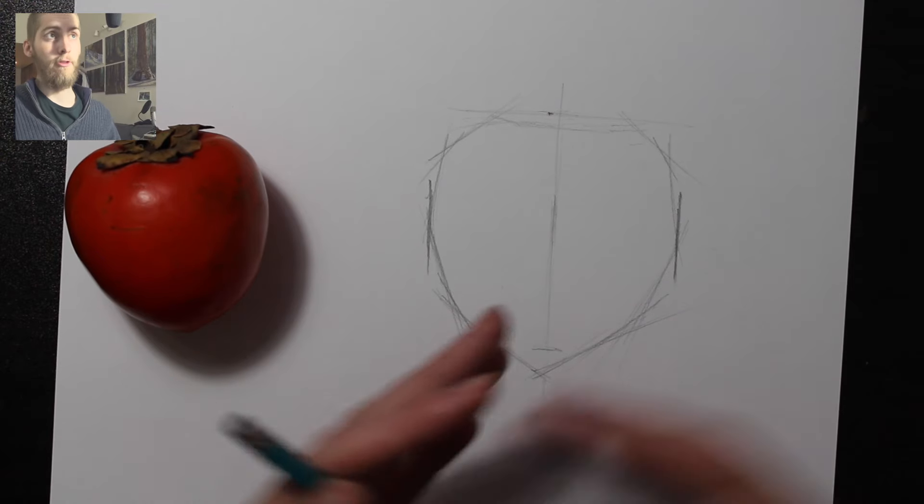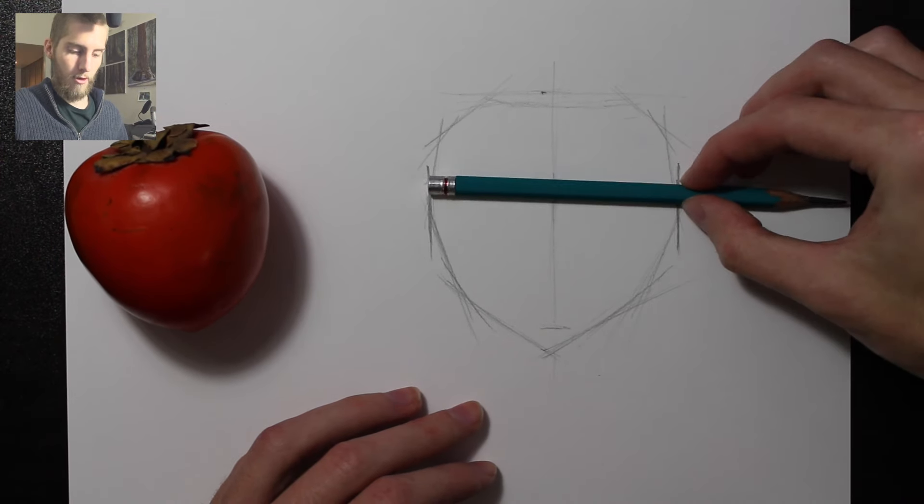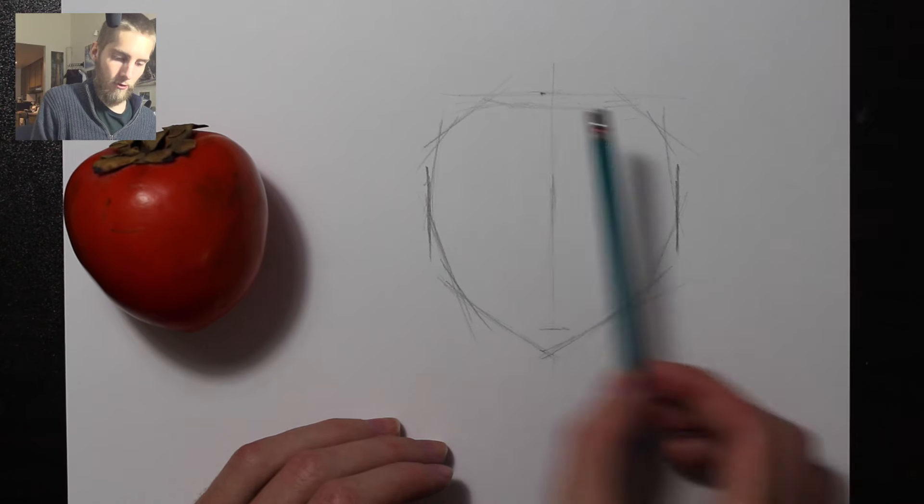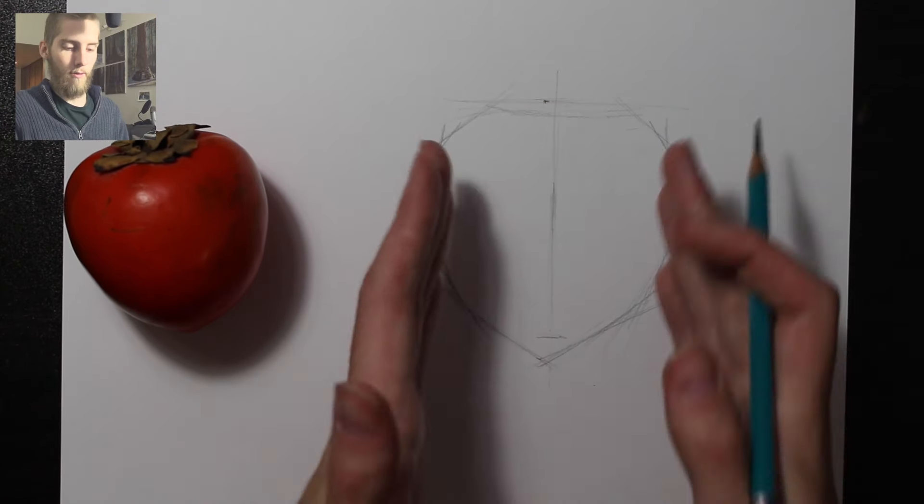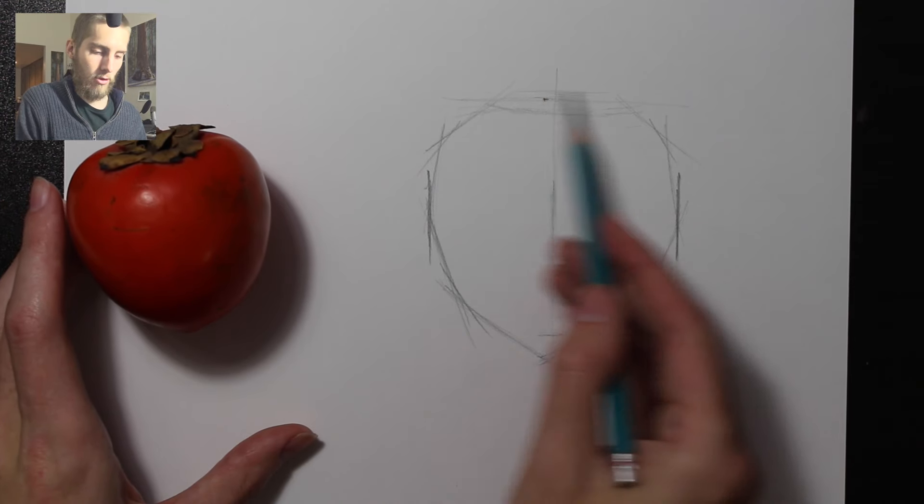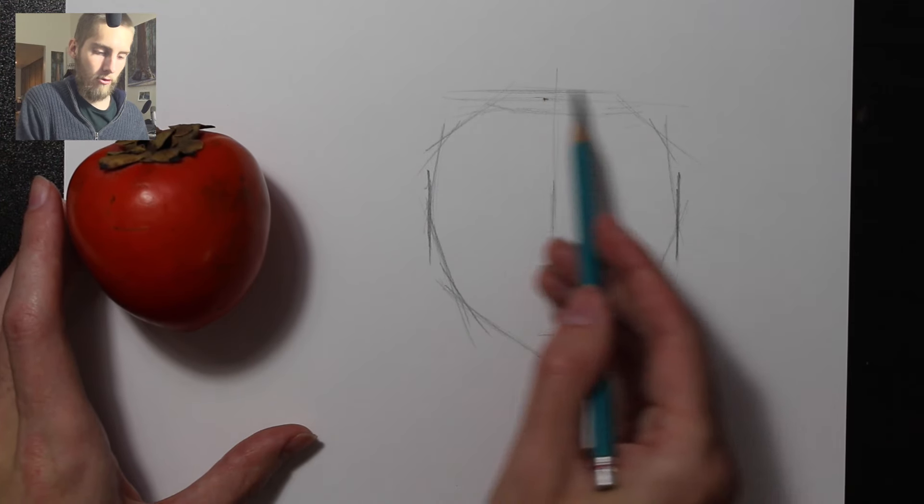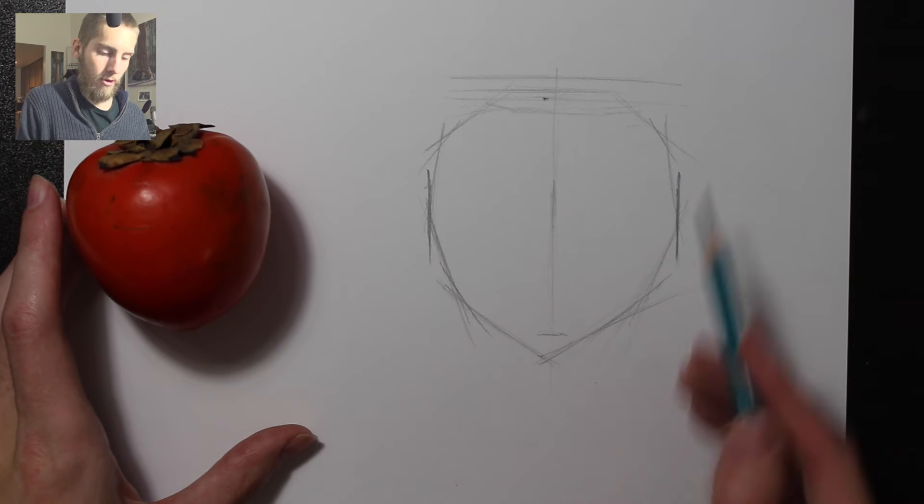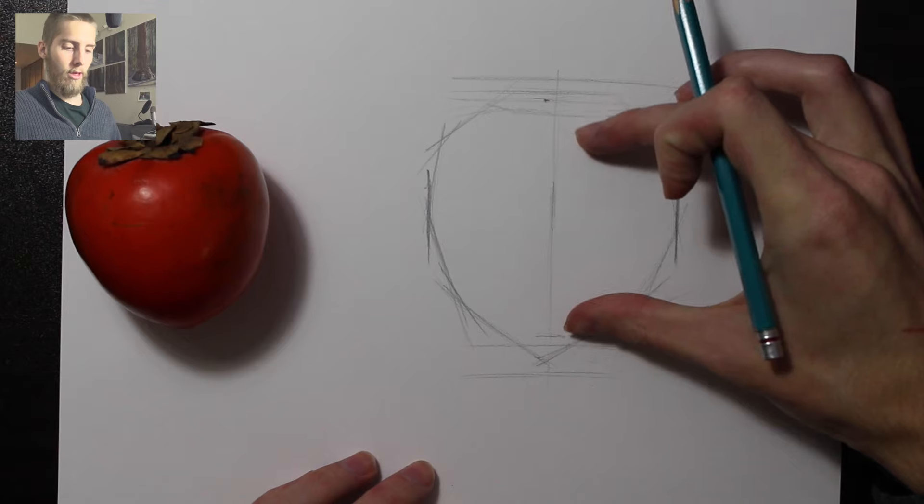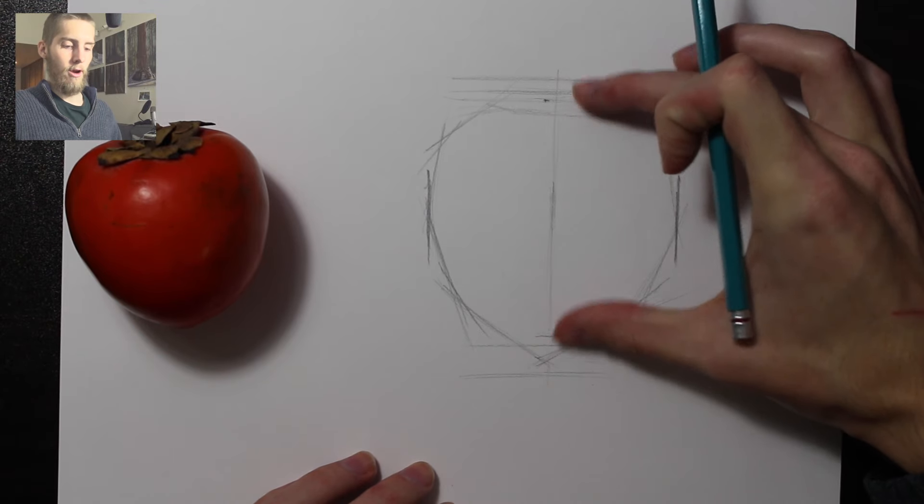And also in future videos, I'll talk about comparative measuring of how we can determine, I can double check myself and see, do I need to change the width and height? Obviously, sometimes you can just look and observe and see, okay, I need to change the height. It needs to be a little taller, maybe much taller, or taller down here or shorter here.